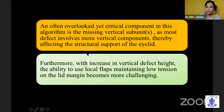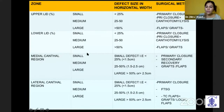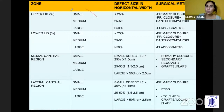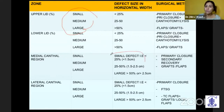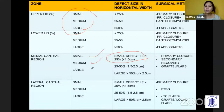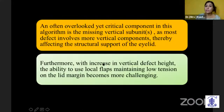All four parts of the periocular region where we have a defect are divided on the basis of horizontal width — small, medium, or large — based on how much of the width is involved, and whether we are in the medial or lateral canthal region. Based on the width involved, approximately whether it is less than 1.5 cm or more than 1.5 cm, we divide it into small, medium, and large.